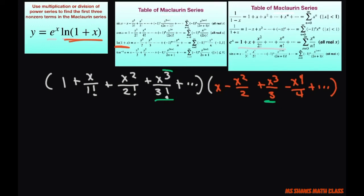1, 2, 3, 4. Yeah. We get this equals x minus 1 half x squared plus 1 third x cubed plus x squared minus 1 half x cubed plus 1 half x cubed.